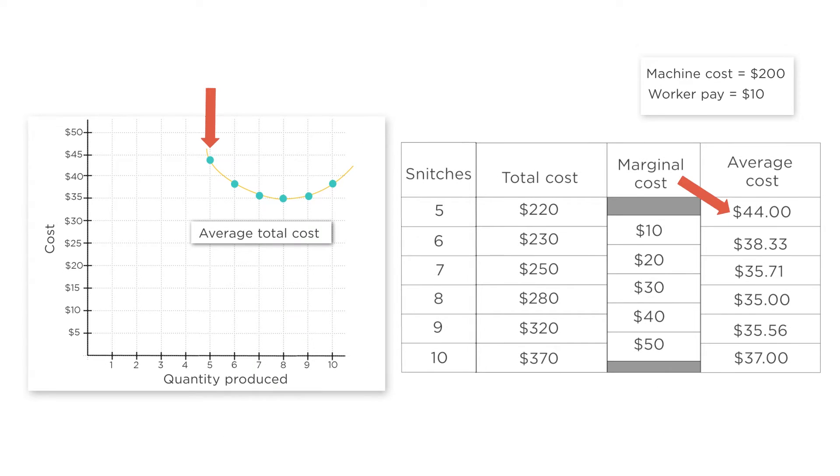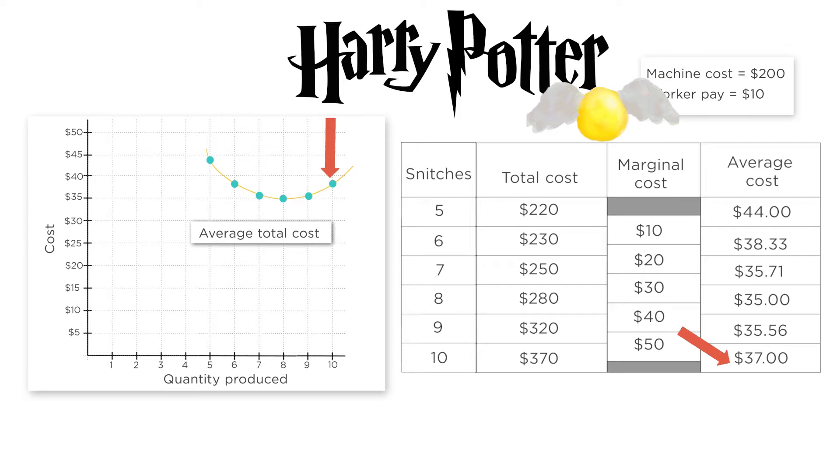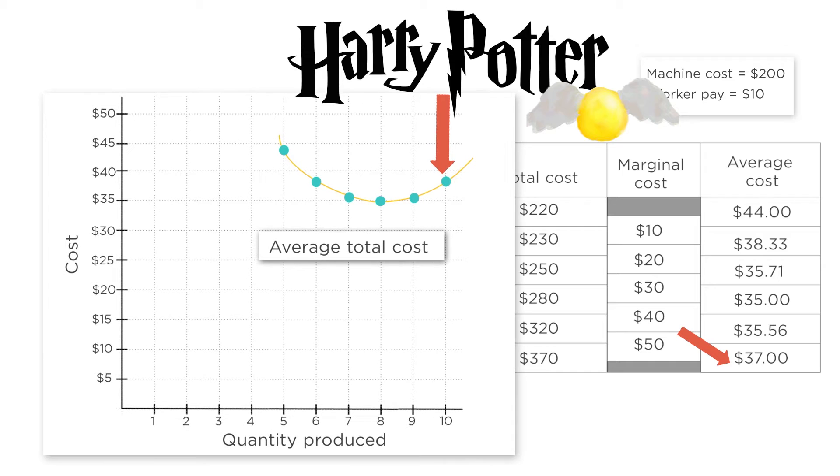Let's return to our golden snitch factory from earlier. Remember how the average total cost first dropped from $44 per snitch when the firm was producing 5 snitches, down to $35 per snitch when it was producing 8? And then it rose when production rose beyond 8 snitches, up to $37 per snitch when the firm was producing 10 snitches? Even though this is a made-up example from the fantasy world of Harry Potter, economists believe that these U-shaped average total cost curves are the norm for firms in real-world industries.